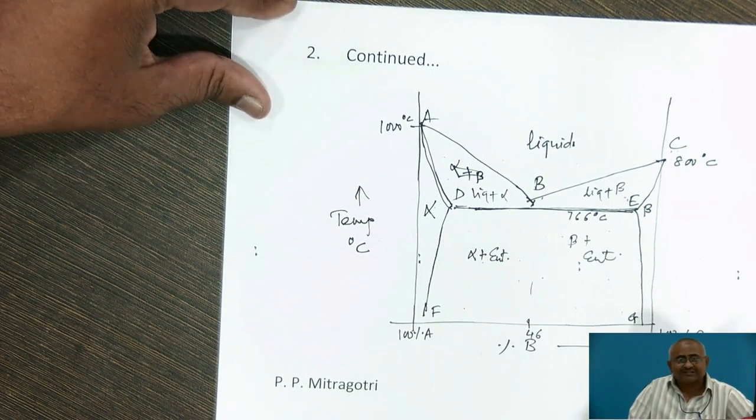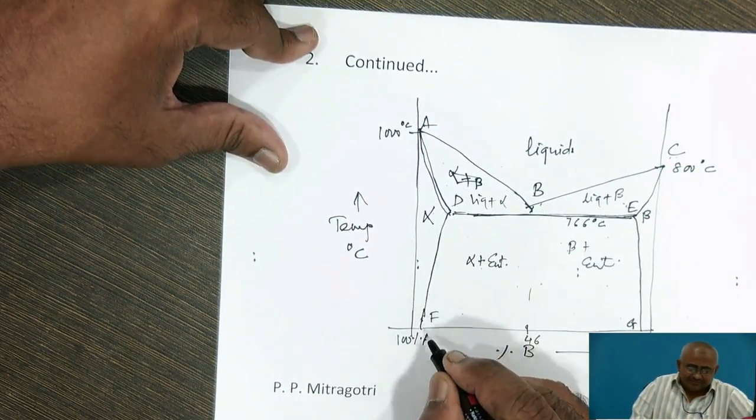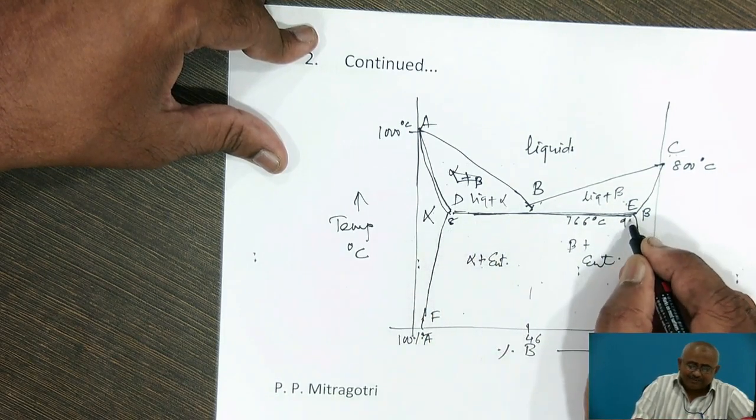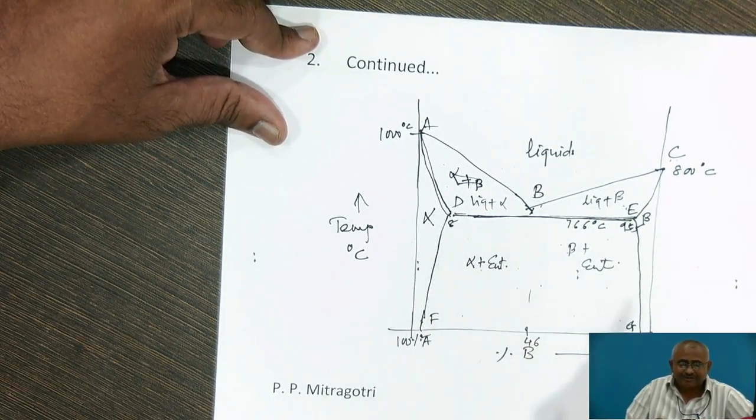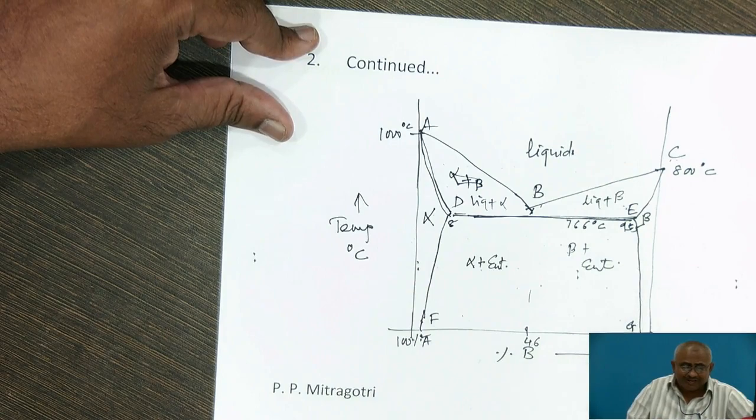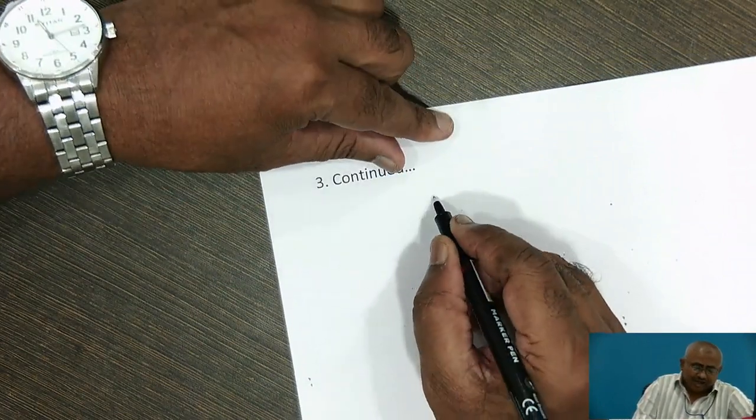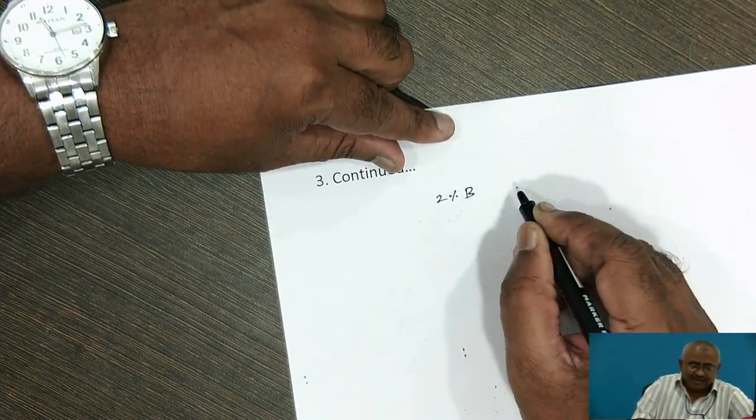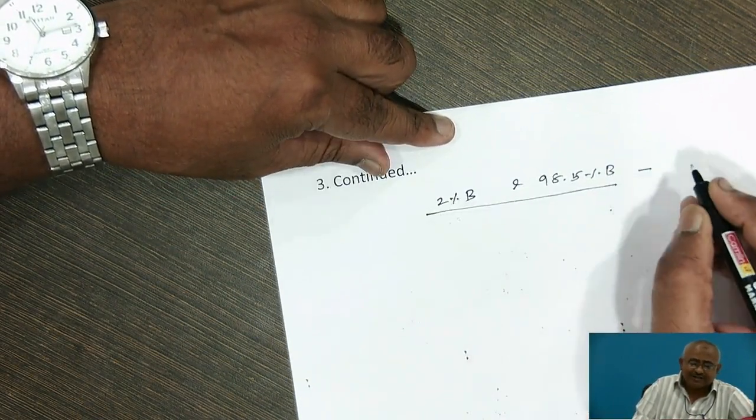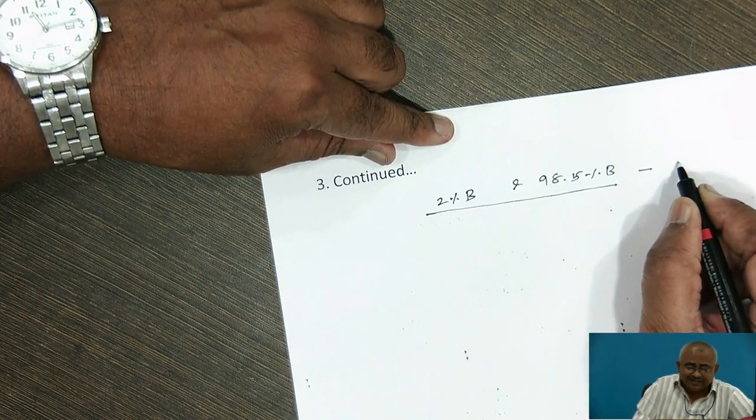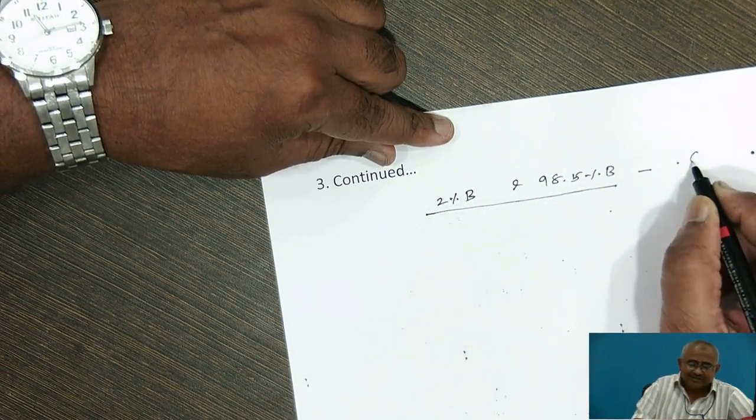In this case, there are three types of alloys. Group 1 alloys are the alloys which contain up to 2% B and more than 98.5% B. These alloys solidify as solid solution and retain their solid solution structure even at room temperature.